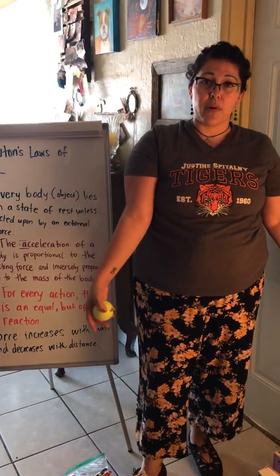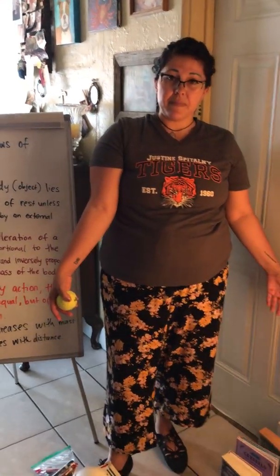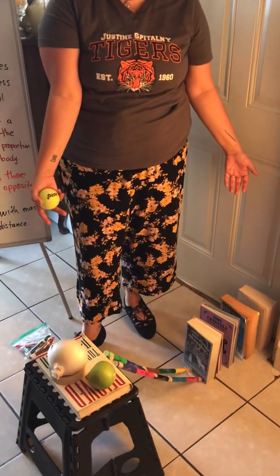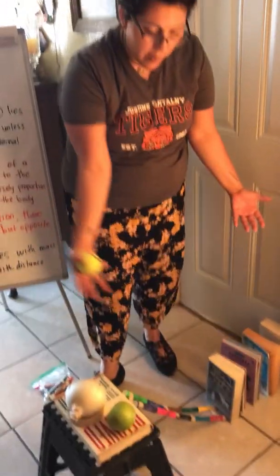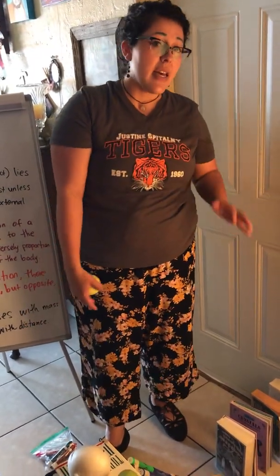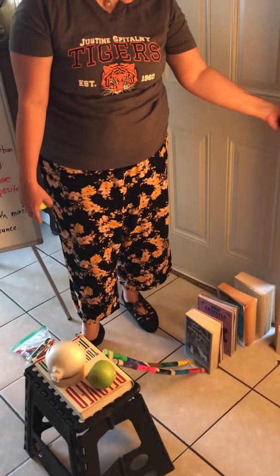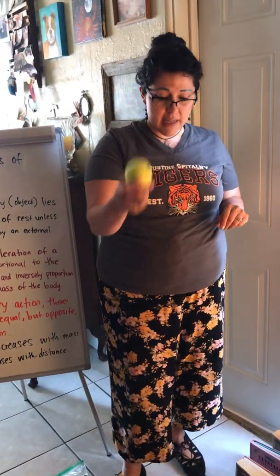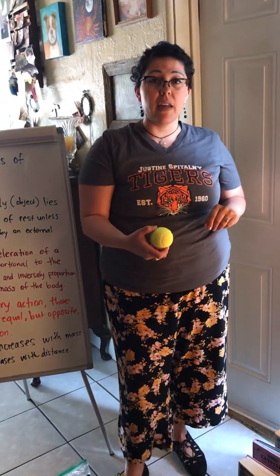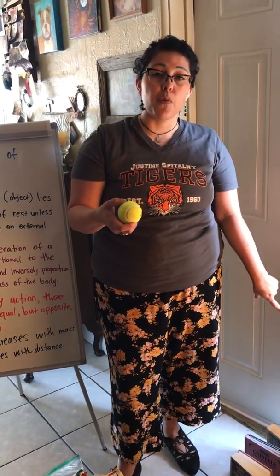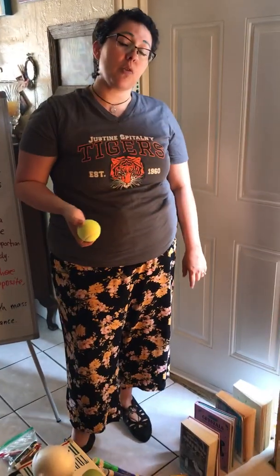Let's look at this Rube Goldberg machine. What is a Rube Goldberg machine? It's a complex machine that performs a simple task. In this case, we're going to ask the Rube Goldberg machine to push open the door for us, and we're going to test out the tennis ball and the onion to see which one creates the most force that can push the door open.